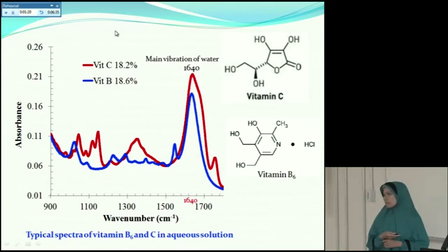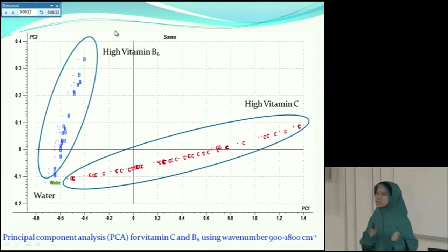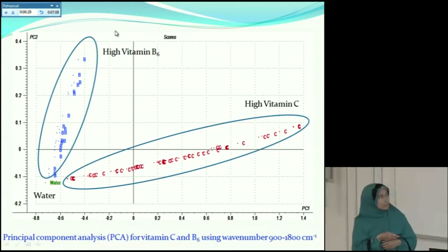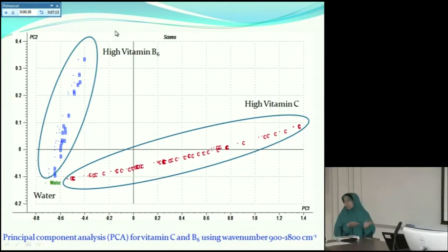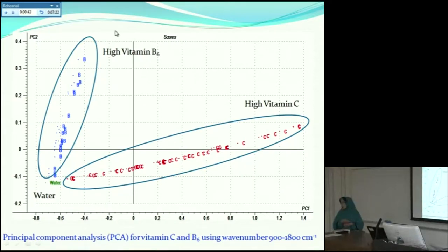This is the result of principal component analysis or PCA. The main goal of principal component analysis is to transform the data in such a way that a new coordinate system is formed with maximum variance. We can see from this graph that there is a difference between Vitamin B6 and Vitamin C in aqueous solution in mid-infrared region.